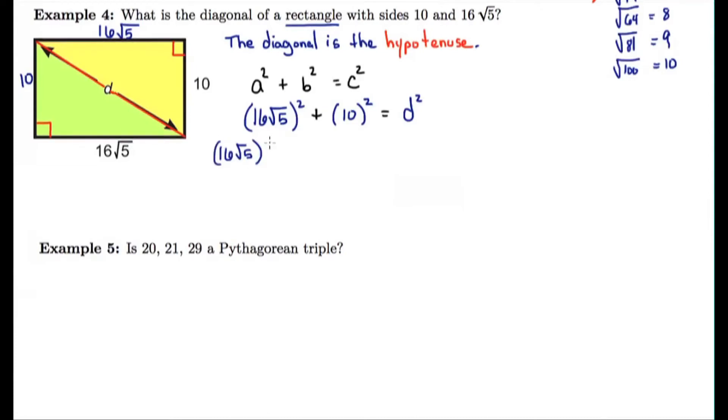So when I square 16 root 5, it's the same as multiplying it times itself. And, of course, 10 squared is 100. So how do we do 16 root 5 times 16 root 5? Well, we multiply 16 times 16, which is 256. And root 5 times root 5, which is 25, which simplifies to 5.